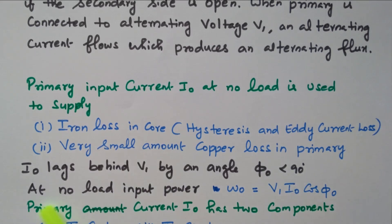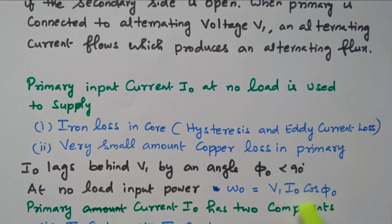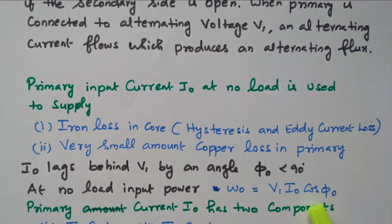At no load, the input power is W0 = V1 · I0 · cos(phi0), where V1 is the applied voltage, I0 is the small amount of current flowing through the coil, and phi0 is the angle between V1 and I0.